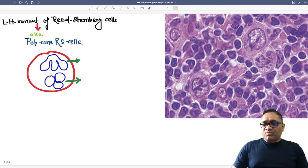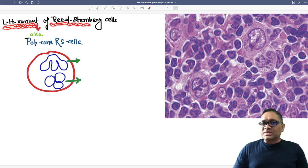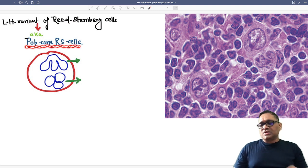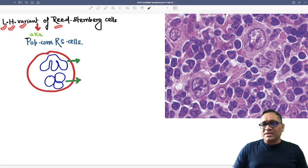In this Hodgkin's lymphoma, you are going to see this is called lymphocyte histiocyte variant of Reed-Sternberg cell, which is popularly known as popcorn Reed-Sternberg cell. Why is this lymphocytic histiocyte variant of Reed-Sternberg cell called popcorn Reed-Sternberg cell?